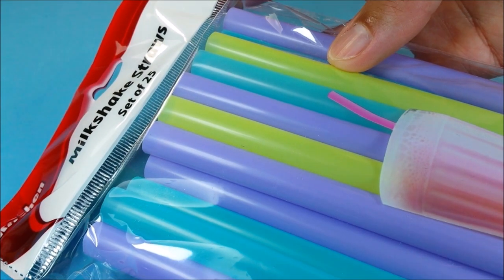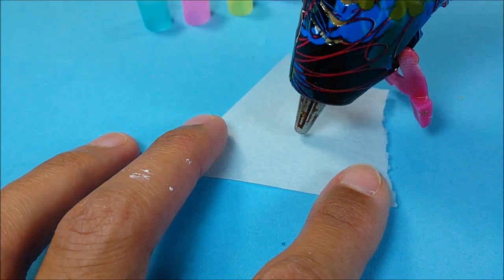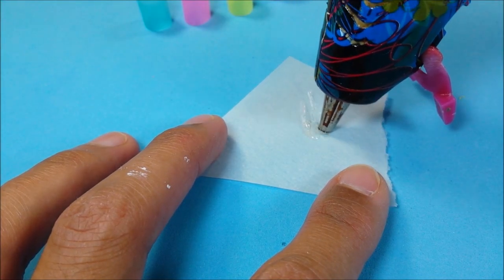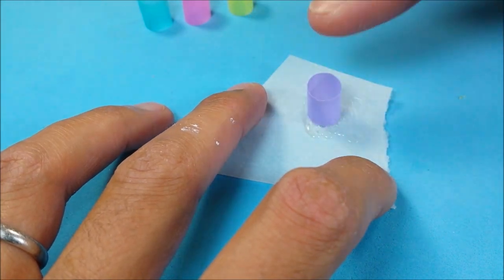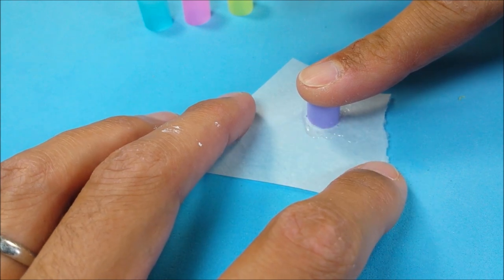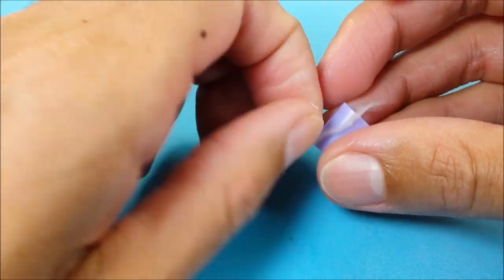And then I'm just taking these wide straws. Cut my straws, lay out some parchment paper and some hot glue, and then I can place my straw on my hot glue. And when it's dry, I peel off the hot glue, and my bottom is sealed.